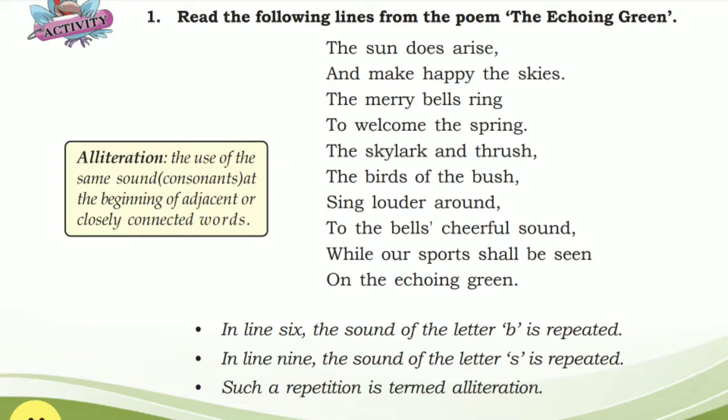In line nine, the sound of the letter S is repeated: 'while our sports shall be seen.' It is repeated in 'sports,' 'shall,' and 'scene.' Such a repetition is termed alliteration — the use of the same consonant sound at the beginning of adjacent or closely connected words.